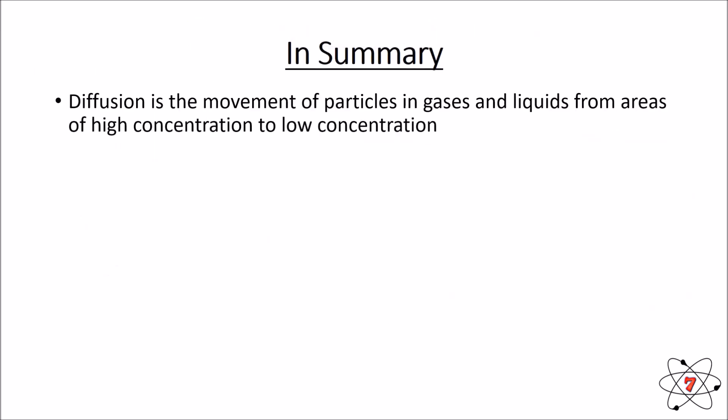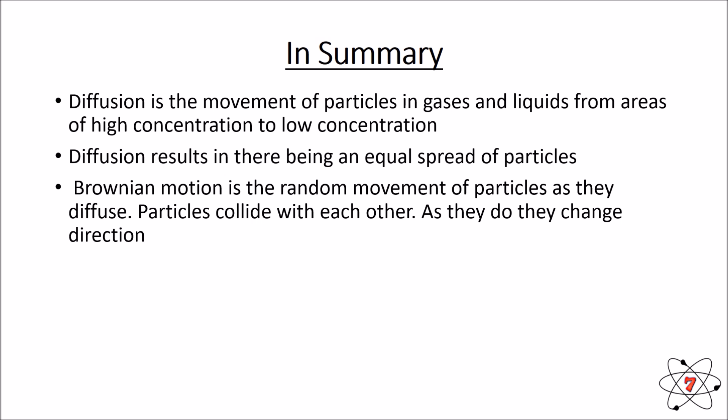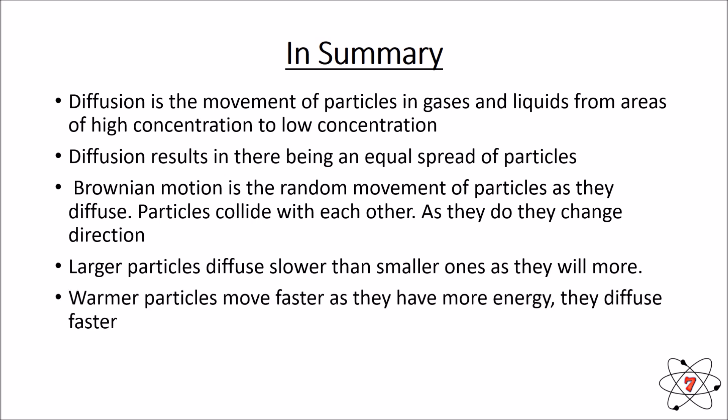So in summary, diffusion is the movement of particles in gases and liquids from areas of high concentration to low concentration. Diffusion results in there being an equal spread of particles. Brownian motion is the random movement of particles as they diffuse. Particles collide with each other. As they do, they change direction. Larger particles diffuse more slowly than smaller ones because they're going to collide more. Warmer particles move faster as they have more energy so they diffuse faster.